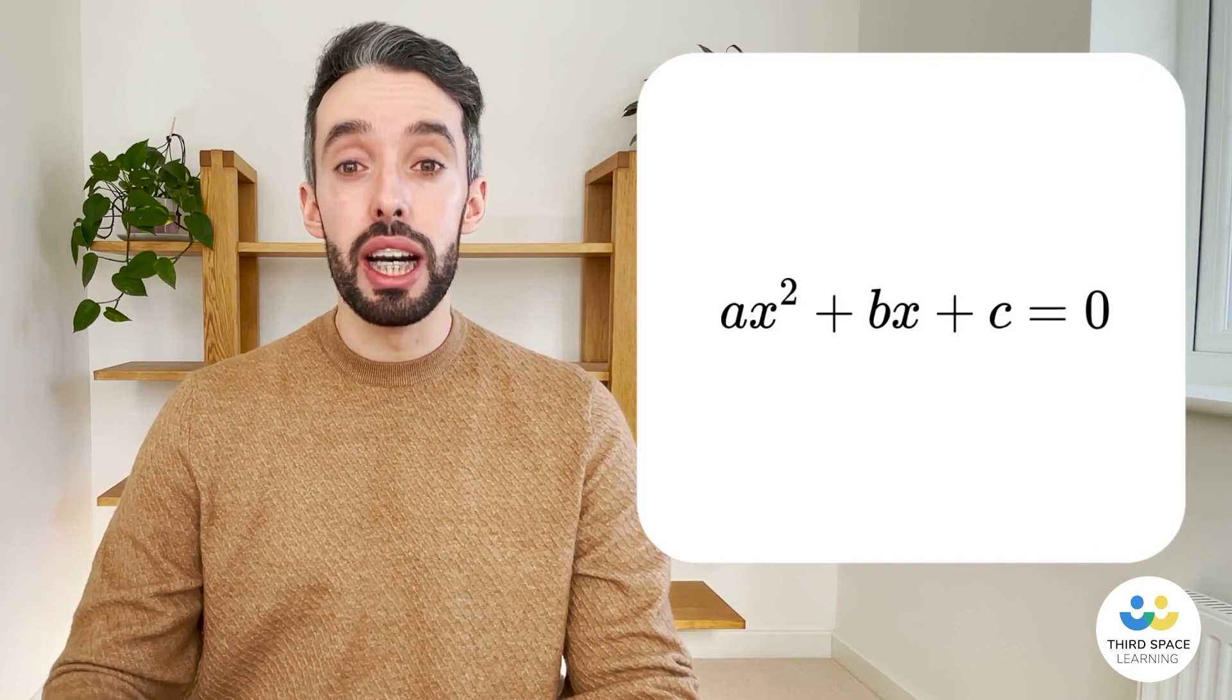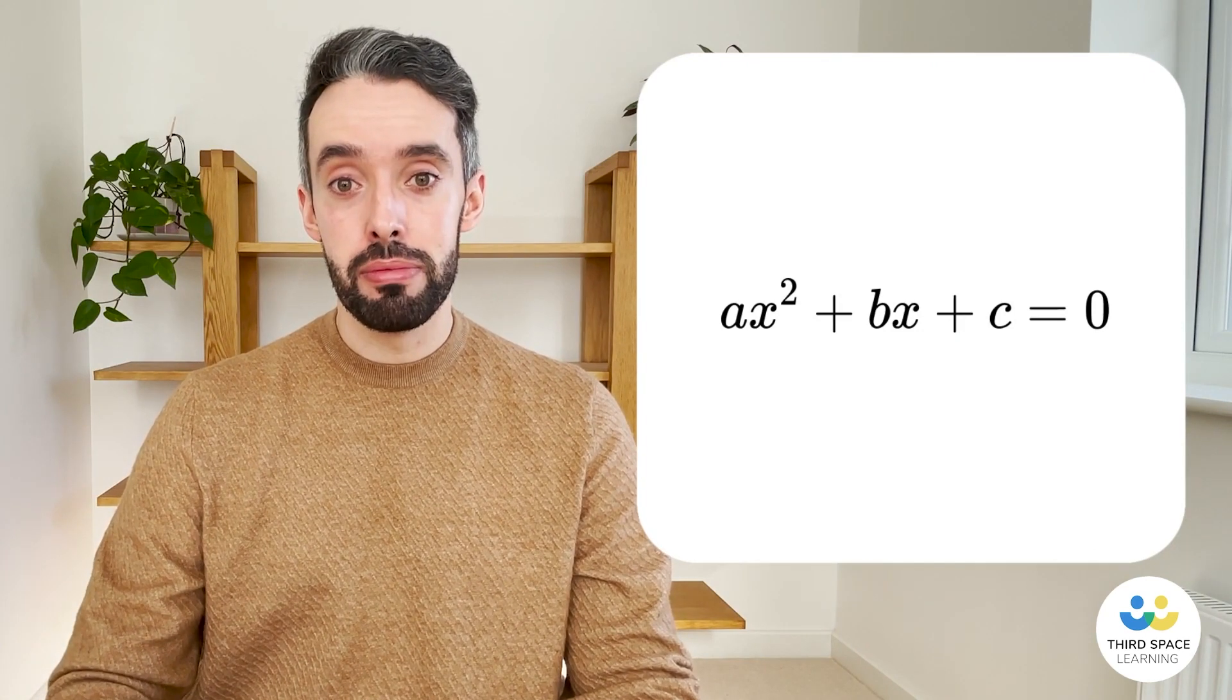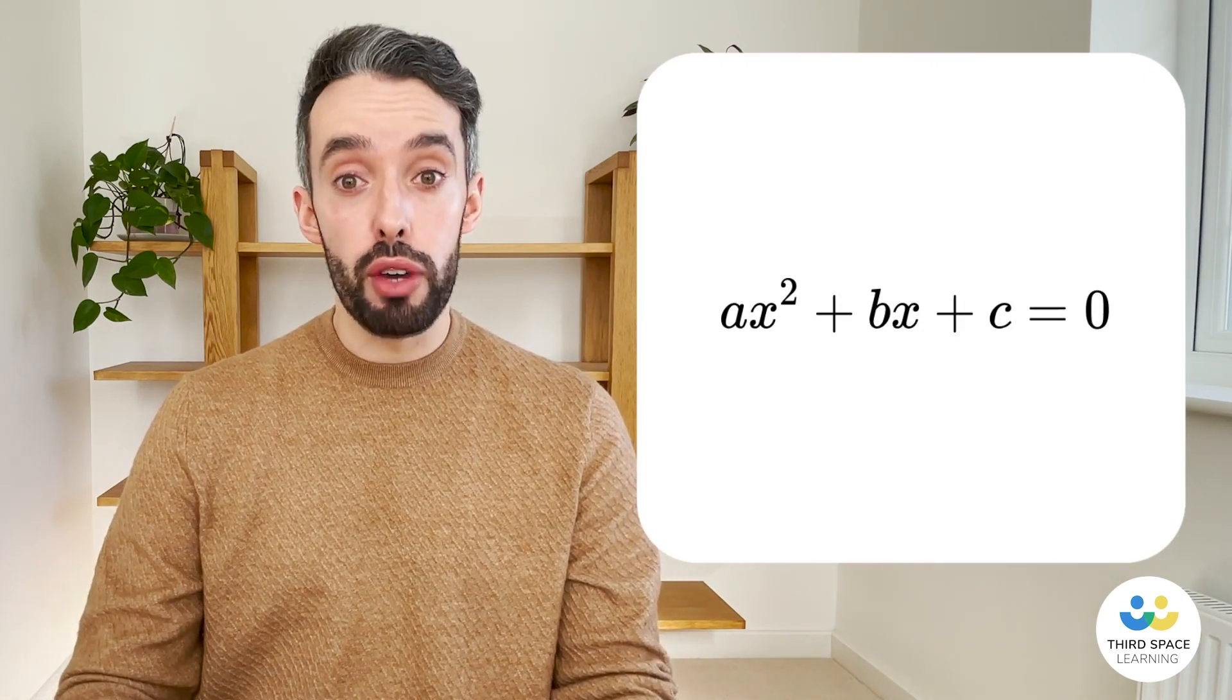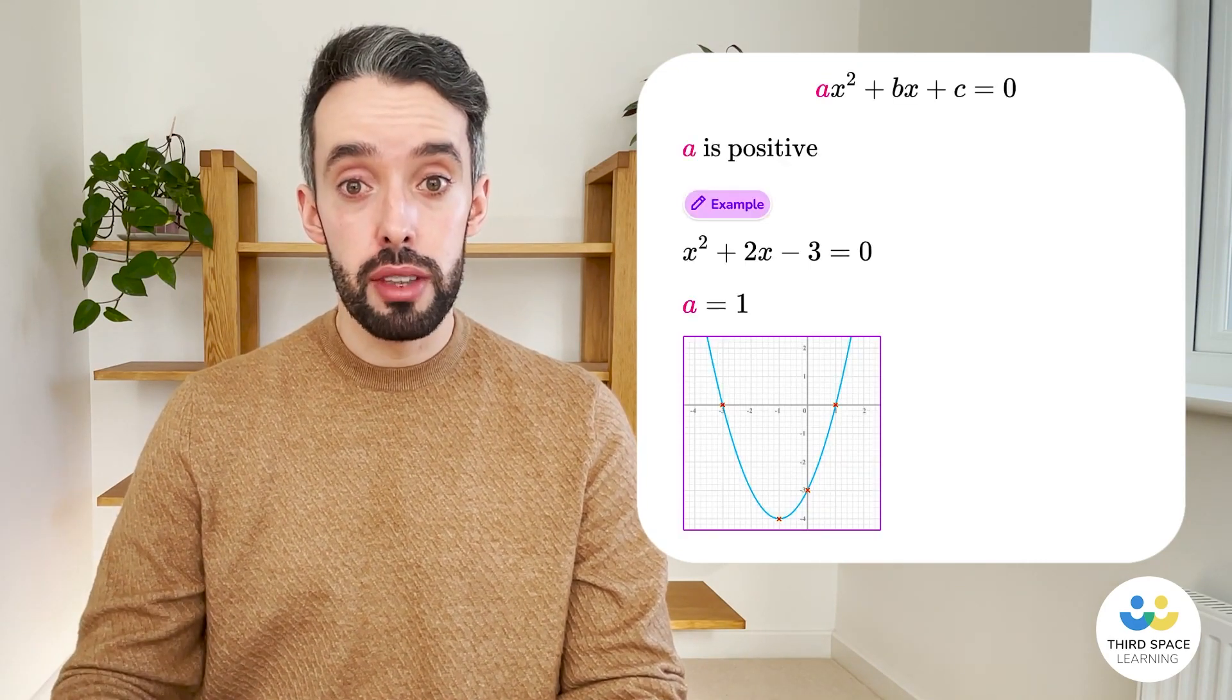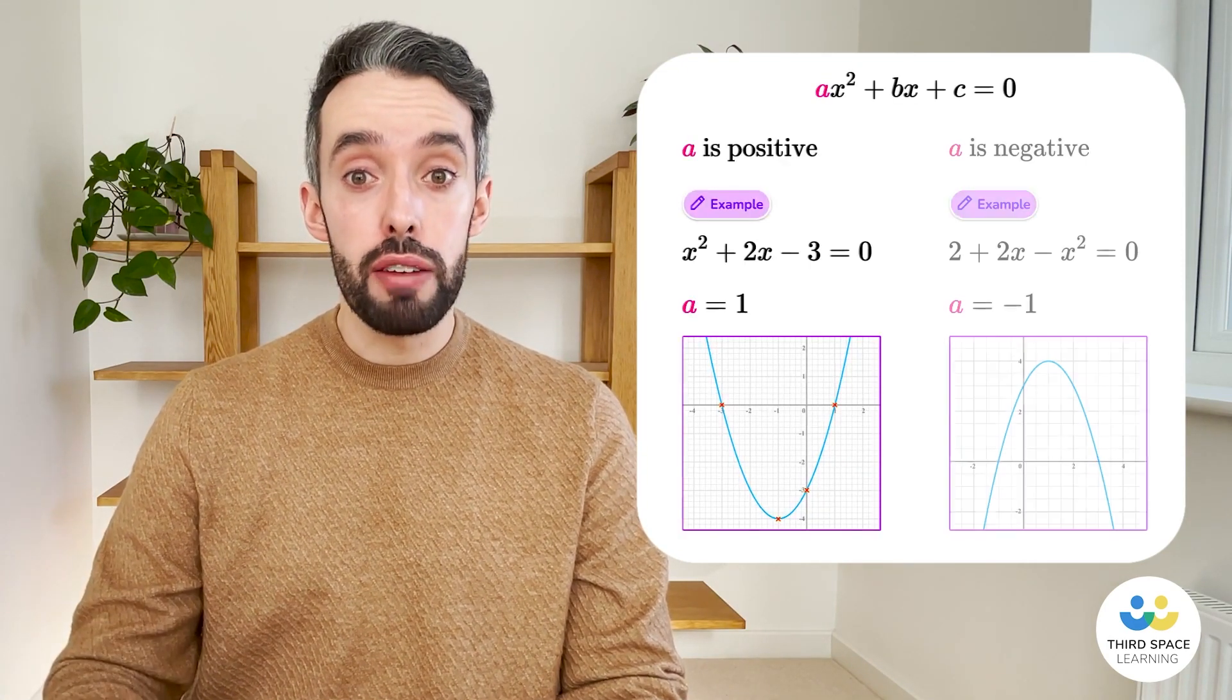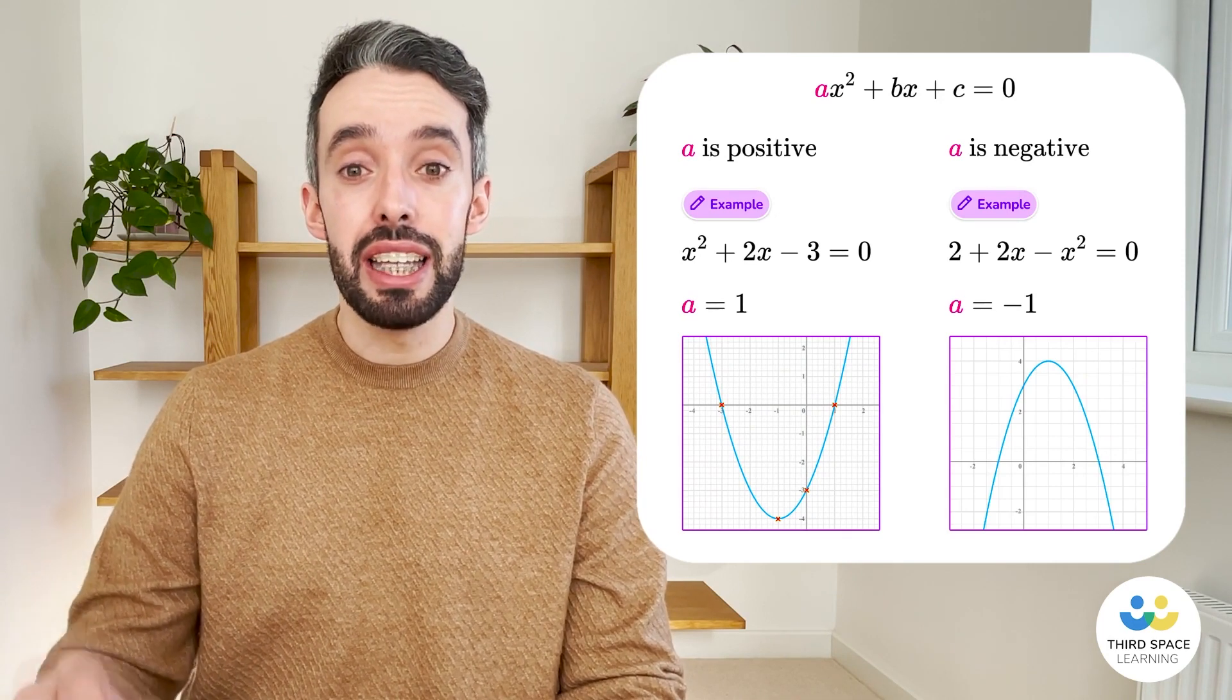Quadratic equations are equations that are raised to a power no higher than 2. They're in the form ax squared plus bx plus c. They produce curve graphs that are u-shaped when the coefficient of x squared is positive, and they produce n-shaped graphs if the coefficient of x squared is negative.